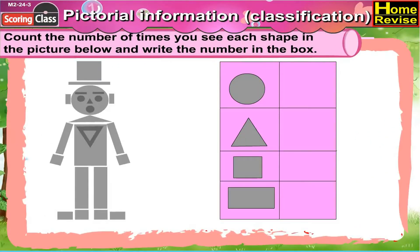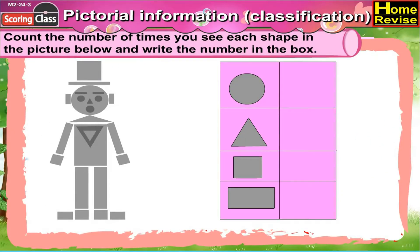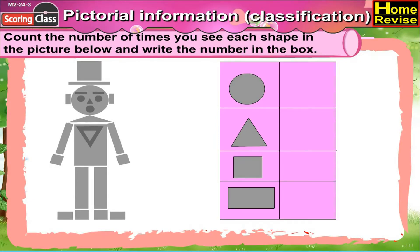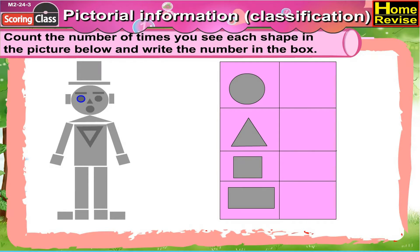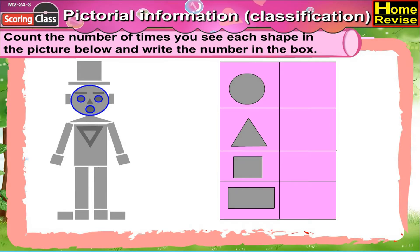Count the number of times you see each shape in the picture below and write the number in the box. First, let us see the circle. There are one, two, three, four circles.